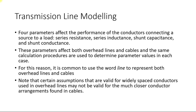These parameters affect both overhead lines and cables, and the same calculation procedures are used in each case. The difference lies in the values. In a cable, conductors are in close proximity with a better insulator such as rubber instead of air. This increases the capacitance value significantly, so cables have much more shunt capacitance than overhead transmission lines.